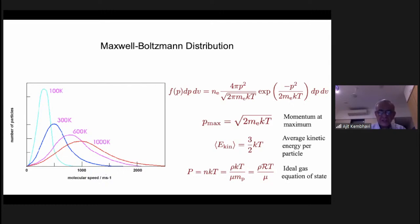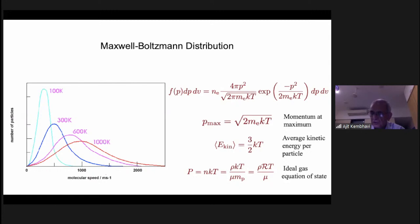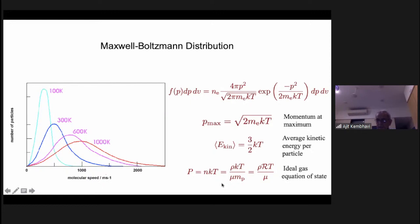For any given temperature, the maximum momentum occurs at a specific point. The average energy per particle is (3/2)kT, independent of mass, so for a gas of protons the average energy is also (3/2)kT. The pressure P = nkT can be written as ρkT/(μm_p), where μ is the molecular weight. I use m_p for simplicity, though strictly speaking the atomic mass unit should be used.